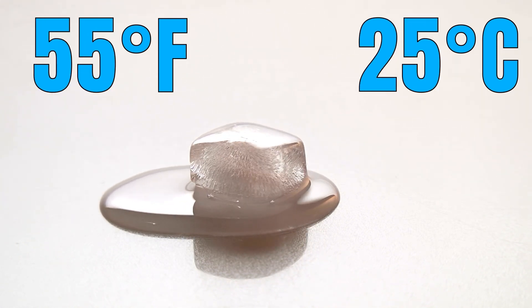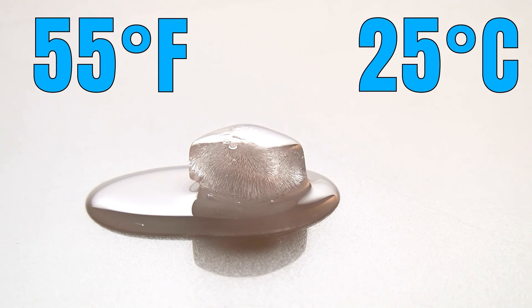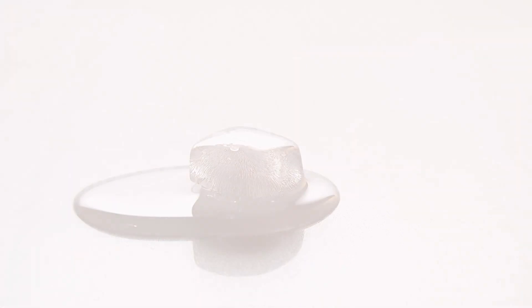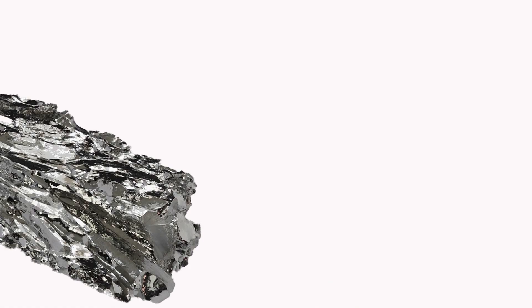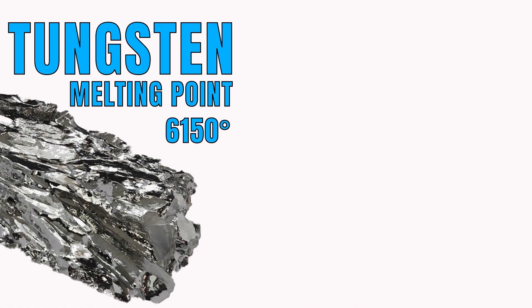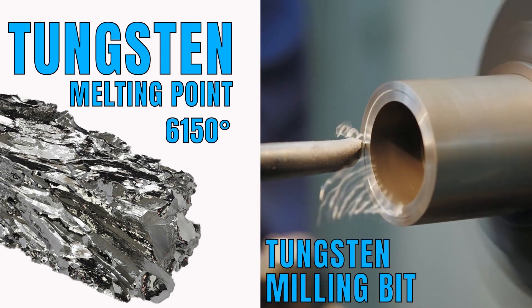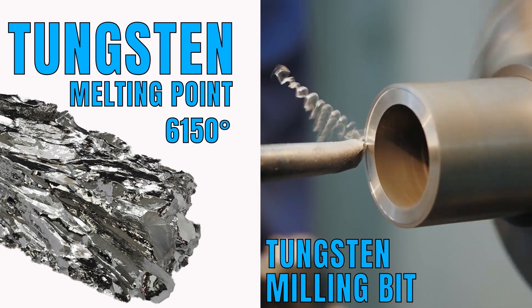The melting point can tell us a lot about a substance. For instance, metals with high melting points are often used in situations where high temperatures are expected.